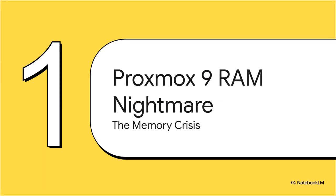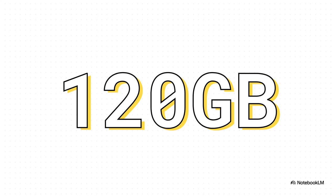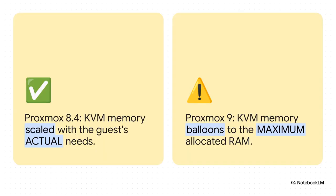Let's dig in and understand what's going on with this memory crisis. Imagine a server with 196 gigs of RAM — that should be plenty of breathing room. But people are reporting that launching just one virtual machine can make its KVM process eat a jaw-dropping 120 gigs of that RAM. Launch a second one, and there goes another 60, pushing you to 180 gigs. It's completely unsustainable, and this is the core of the nightmare.